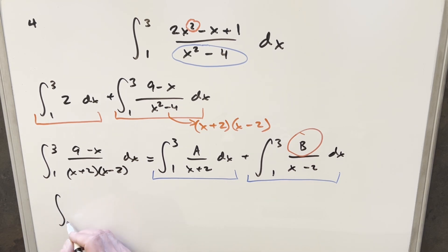But because we have that discontinuity at two, let's just split it up into two integrals in order to deal with this. So for the first one, we'll go from one to two of B over x minus two dx. And then we'll have our second one just going from two to three.